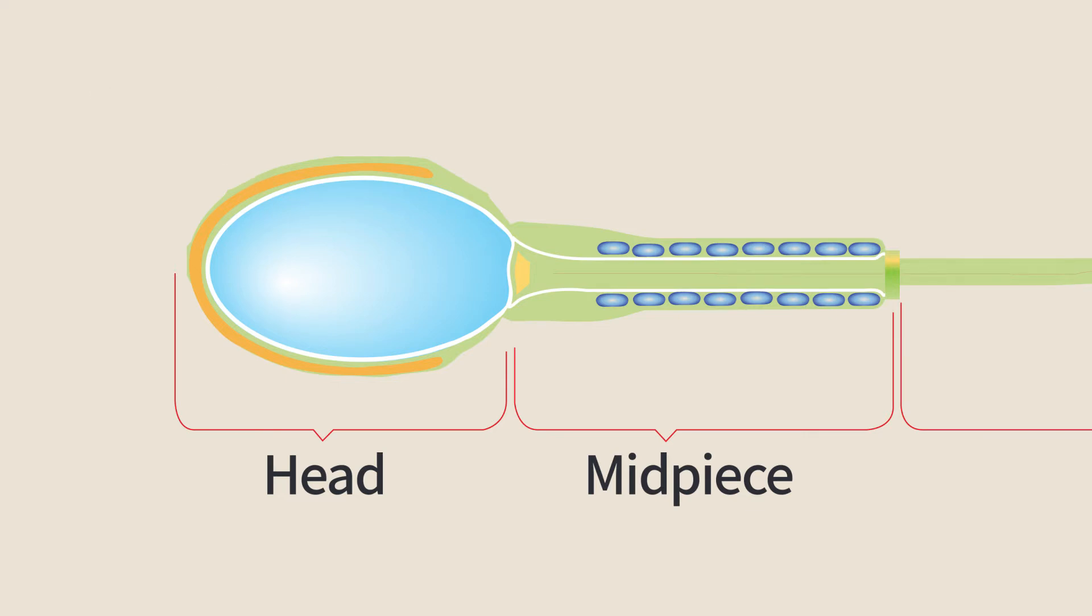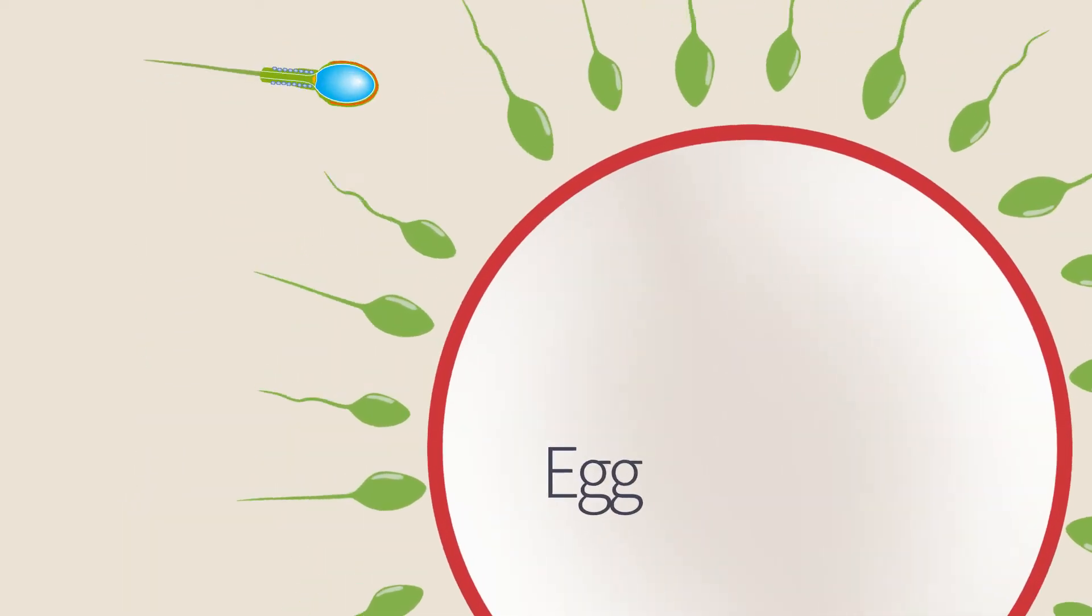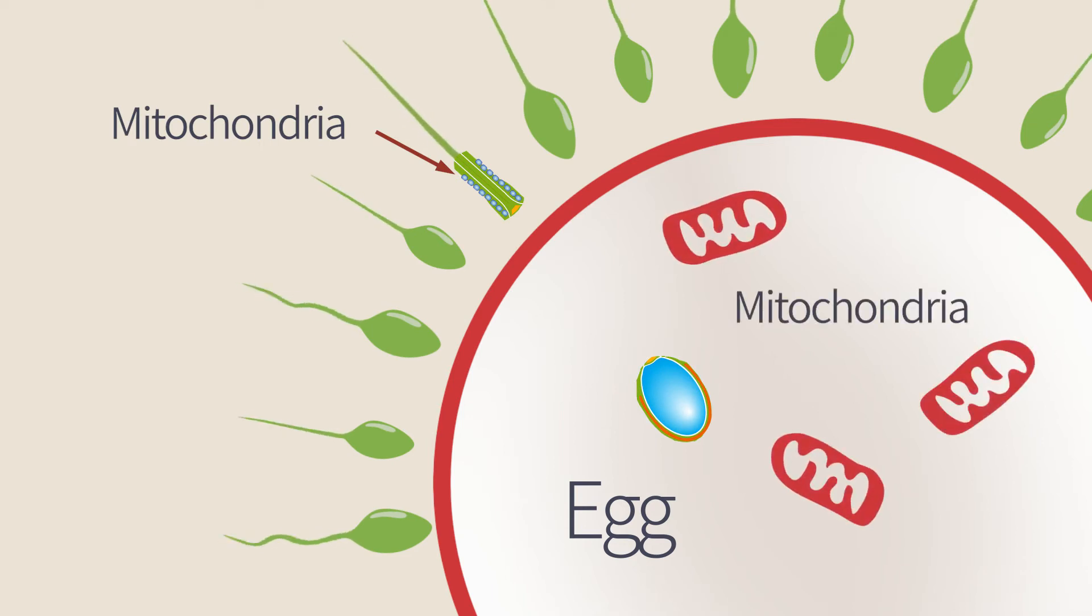The basis of the flagellum is rich in mitochondria that provide the energy required for its fast movement. These mitochondria do not normally enter the egg and are not passed on to the next generation that contains only maternal mitochondria from the egg.